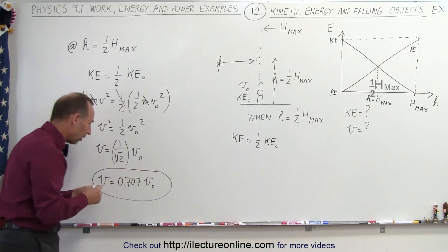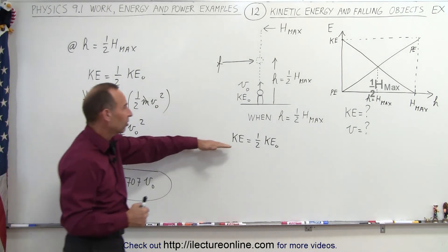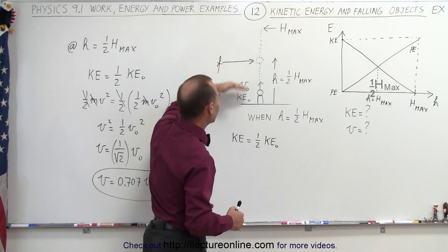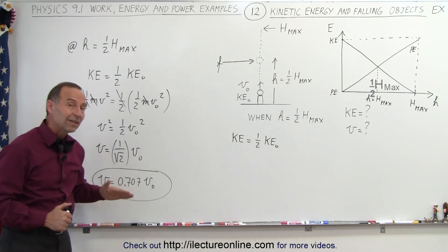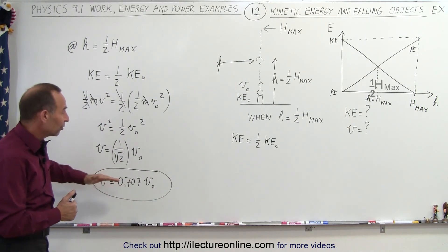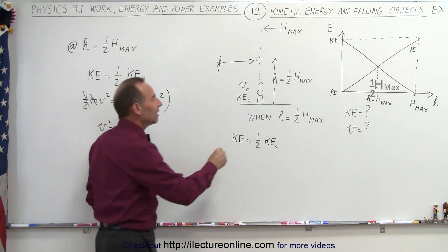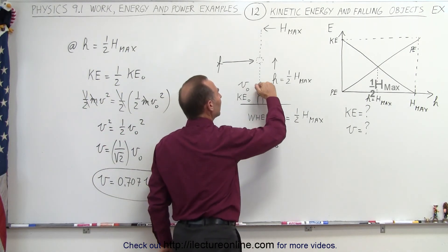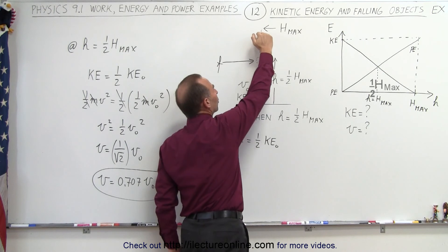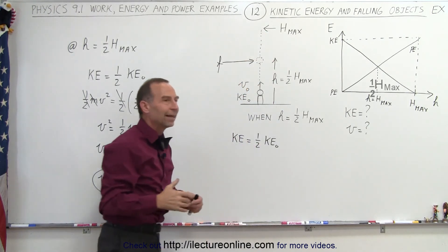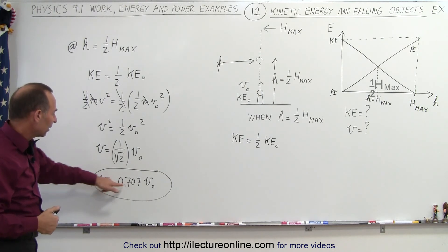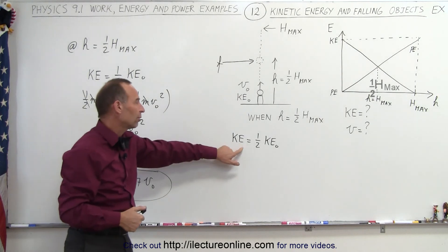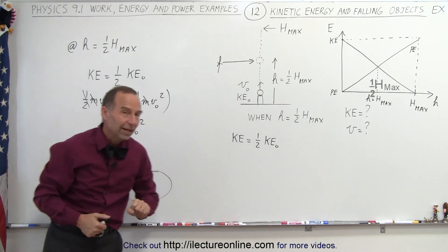So the interesting part is, even though half of its kinetic energy is lost when you reach the halfway point on the way to the maximum height, you still have 70.7% of the original velocity. So what happens is, the velocity decreases initially very slowly, and then velocity increases much more quickly as you continue to go in height, as a function of position of course. So that's kind of interesting, so there's not a linear relationship between velocity and height, but there is a linear relationship between kinetic energy and height.